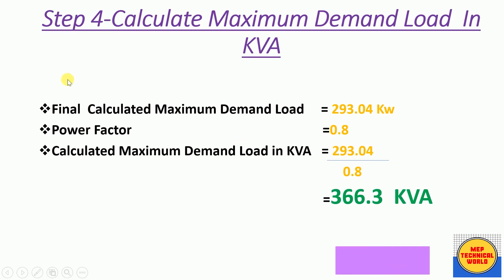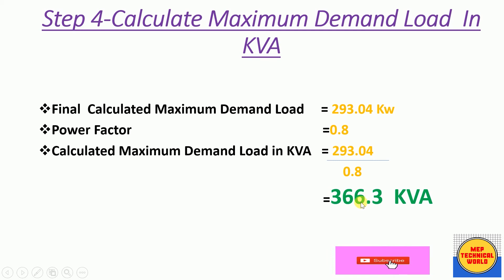In Step 4 we convert the maximum demand load from kilowatts (active power) to kVA (apparent power). The calculated maximum demand load is 293.04 kW. To convert to kVA we use a power factor of 0.8: maximum demand load in kVA = 293.04 / 0.8 = 366.3 kVA.